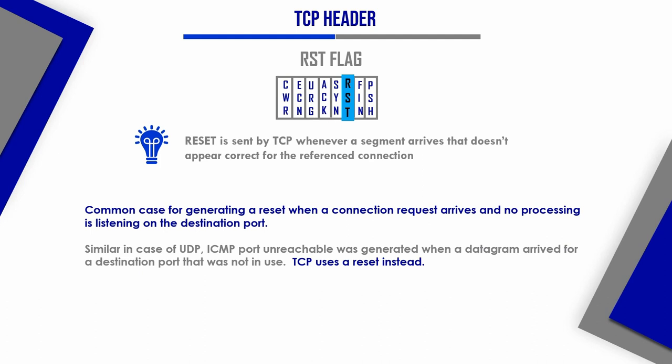The reset flag (RST) tears down a connection very fast by aborting it. While aborting, any queued data is reset and data loss occurs. The receiver of the reset is told that the connection has been aborted rather than normally closed. For example, if a router reboots or a system reboots, a reset is sent. If you initiate a BGP session where BGP is not configured, the port number is not there, so you will receive a reset — connection refused.